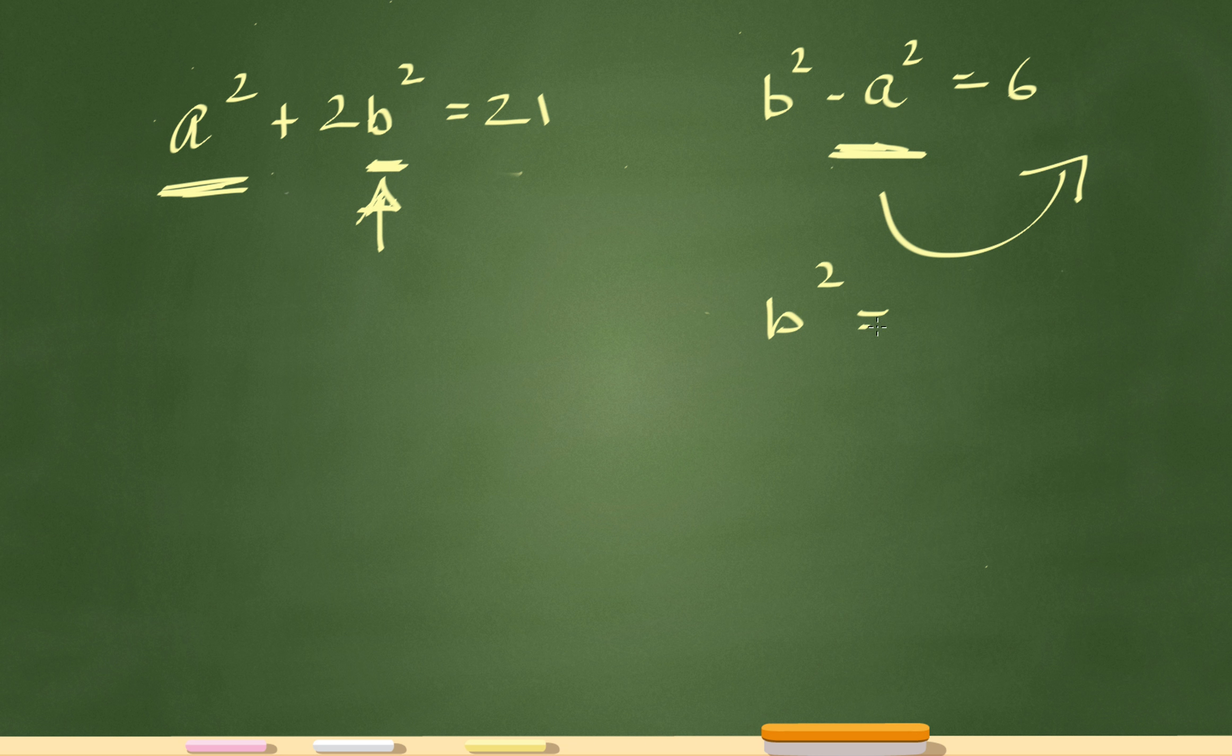Let me do it out for you. b squared equals 6 plus a squared. All I've done is brought this a squared to that side. Now over here, I'll have a squared plus 2 times, instead of the b squared right there, I'm going to replace that with 6 plus a squared. So that's 6 plus a squared, and that equals 21.